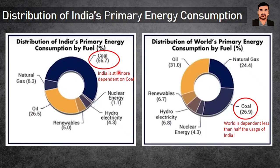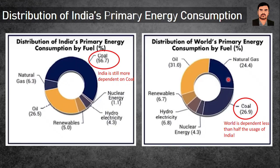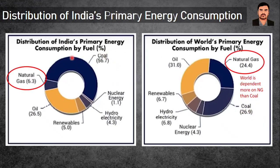Globally, natural gas is 25%, but in India it is just 6%, showing significant potential for growth in the gas sector. Hydroelectric is 6.8% globally versus 4.3% in India; nuclear is 4.3% globally but only 1.1% in India; renewables are 6.7% globally versus 5% in India. Oil is about 31% globally and 26% in India. The key takeaway is that the world uses less than half the coal India uses, and natural gas remains an underutilized cleaner energy source for India.